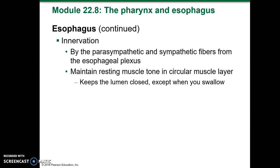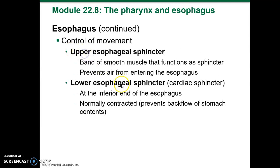The esophagus maintains resting muscle tone in the circular muscle layers, keeping the lumen closed except when swallowing. Control of movement includes the upper esophageal sphincter, a band of smooth muscle that prevents air from entering the esophagus. Then you have the lower esophageal sphincter, or cardiac sphincter, at the inferior end of the esophagus; it's normally contracted and prevents backflow from the stomach.